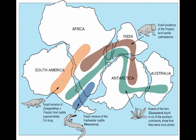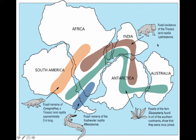Here are some of the similar matching fossils Wegener also found: in addition to the fern and the Mesosaurus, he found the Cynognathus in South America and Africa, and the Lystosaurus across Africa, India, and Antarctica.